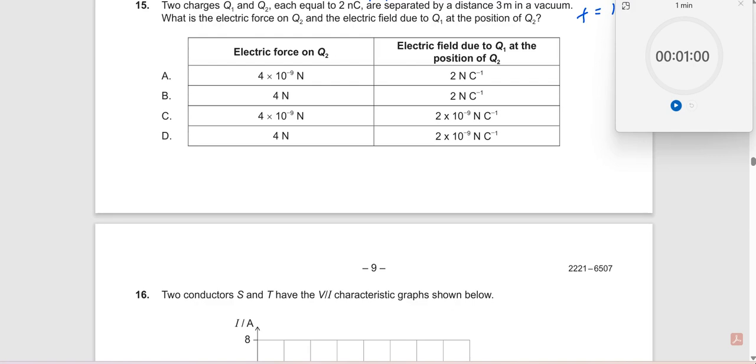Okay, question number 15: Two charges q1 and q2, each equal to 2 nanocoulomb, separated by a distance of 3 meters in a vacuum. So I take two charges q1 here and q2 here, separated by 3 meters. What is the electric force on q2? You need to find the electric force on q2.